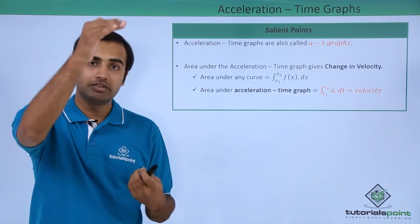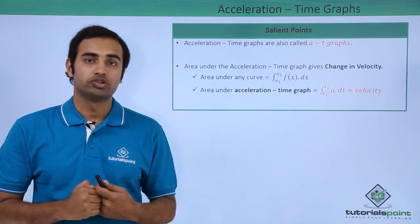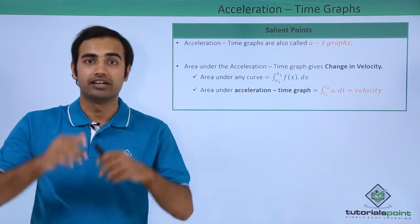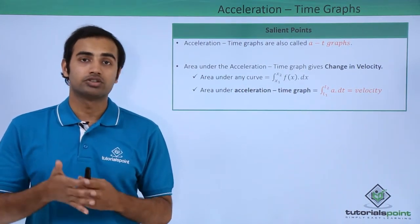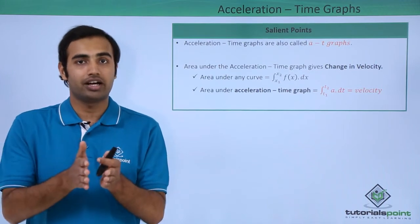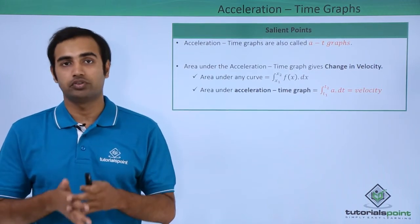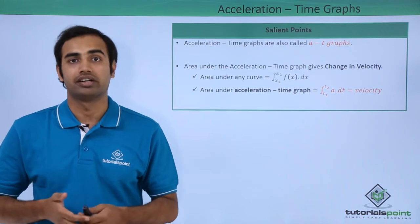This comes from the fact that dv/dt is simply equal to A. So we can say v is simply equal to A dt, and then we can integrate both sides and get this relationship. The slope of AT graph does not have much applications in kinematics, so we won't discuss it in detail.